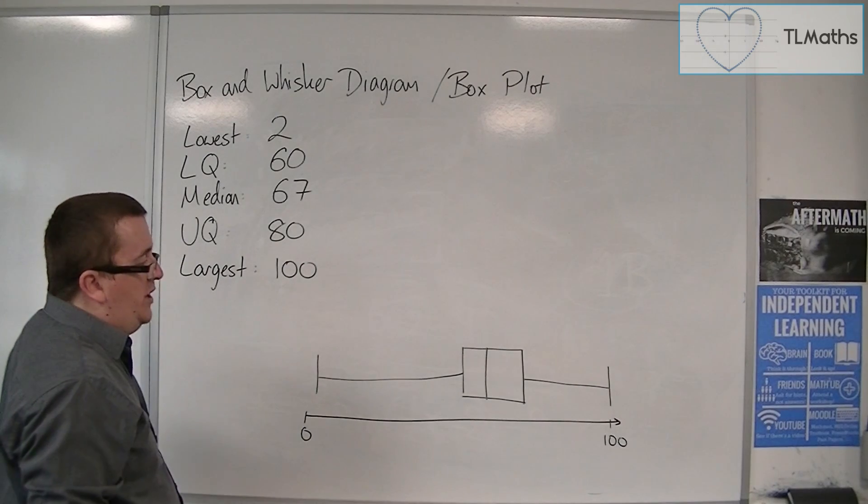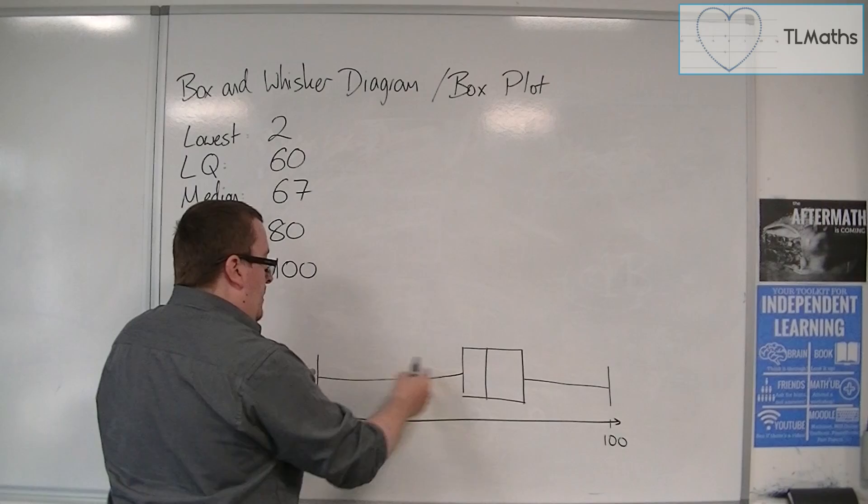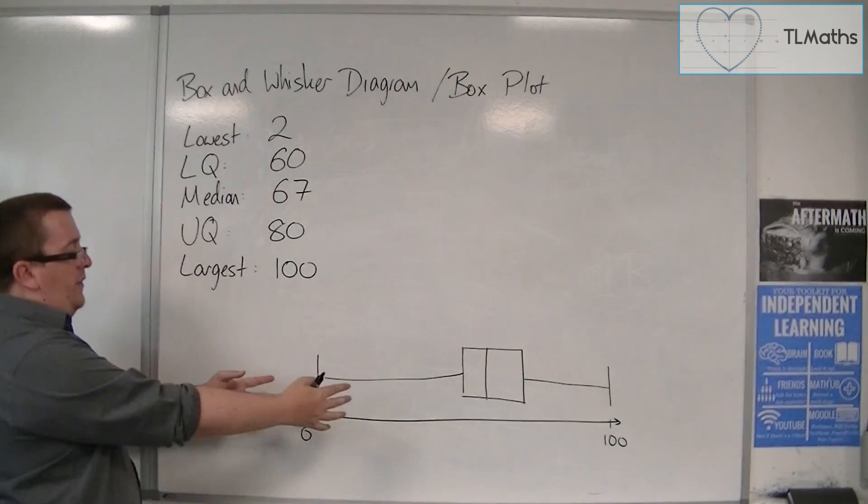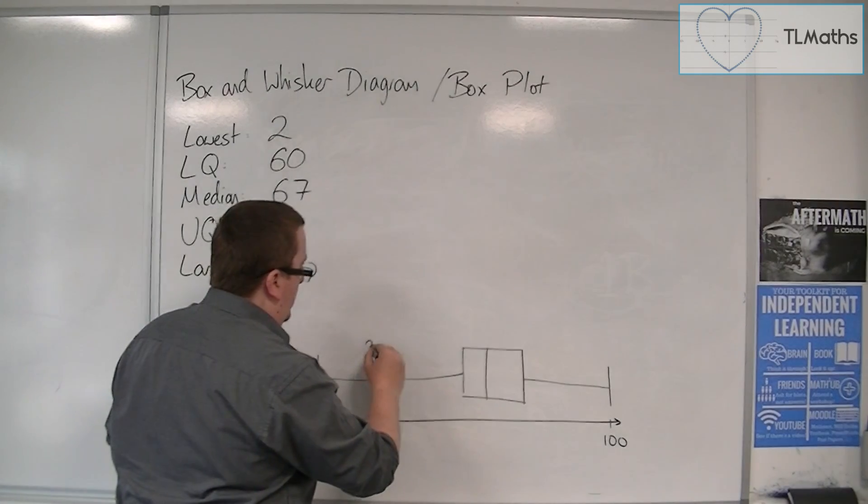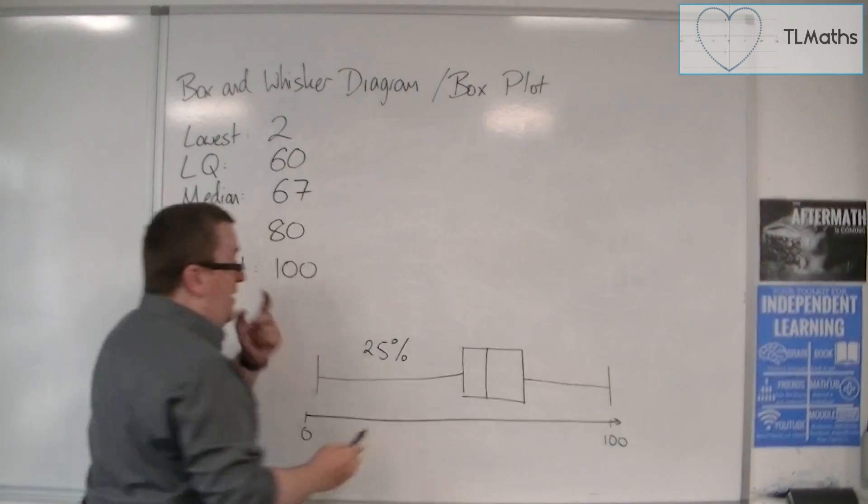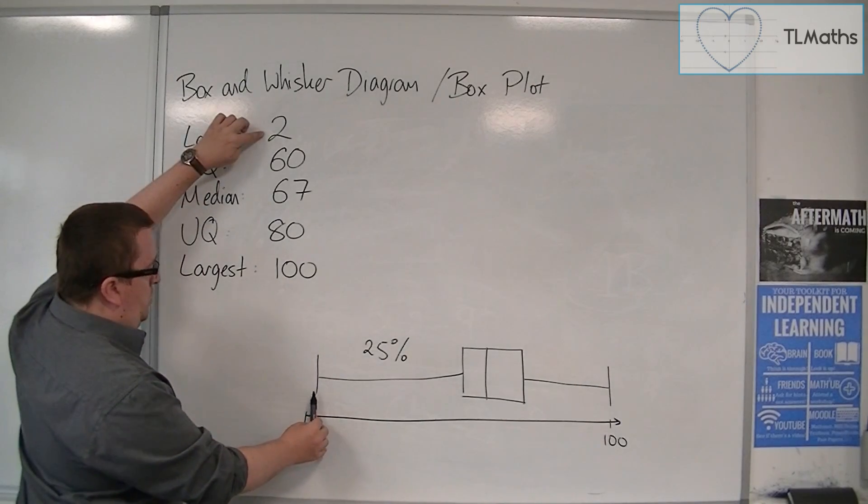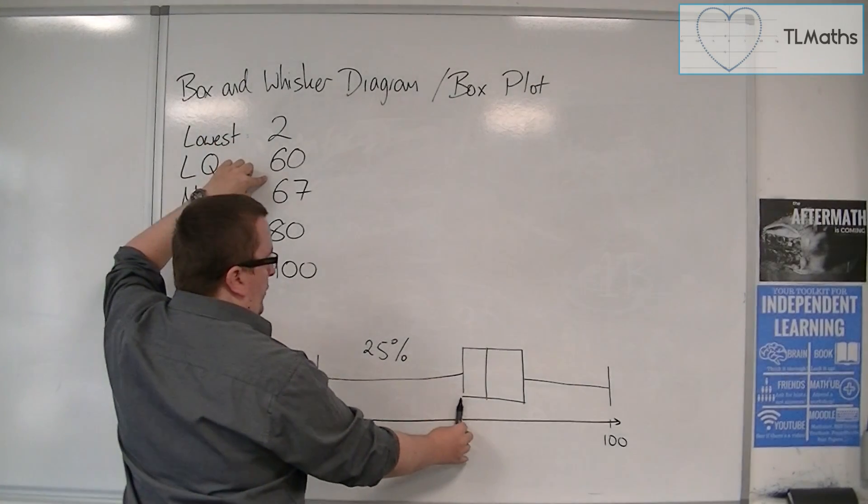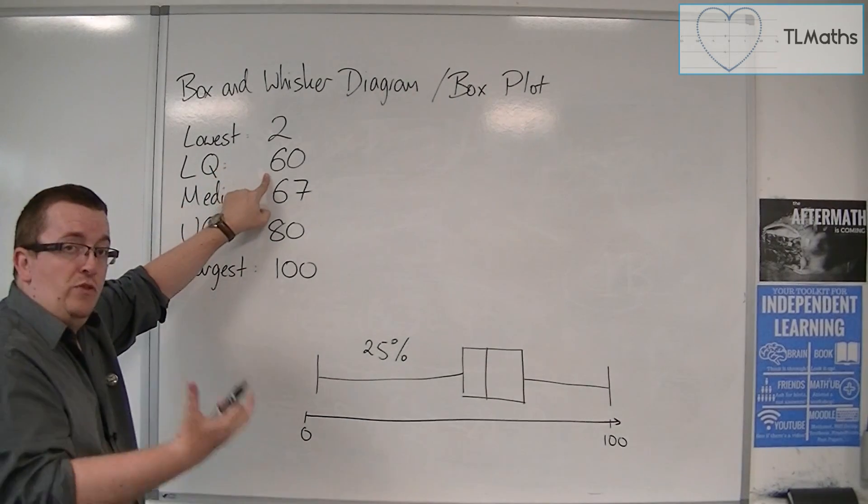Now how do you interpret this? Well, this first part here, this is the first 25% of the data. So the first 25% of the data is contained between the lowest point, 2, and the lower quartile, 60. So a quarter of the data is there.